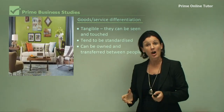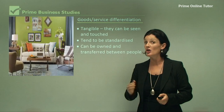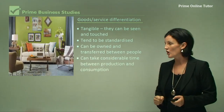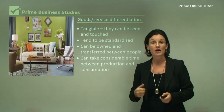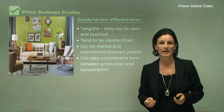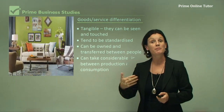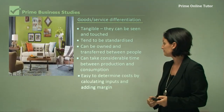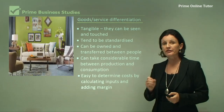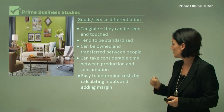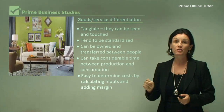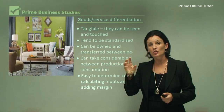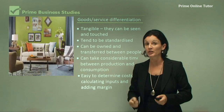Goods can be owned. If I buy a table, I own that table and then I can resell it. Goods take considerable time between production and consumption. If I buy a chair, it's not going to happen automatically — that chair needs to be made. Sometimes I may need to order that chair and it could take weeks for me to receive my purchase. However, goods are very easy in that it's very easy to determine the inputs and the cost of the good. If I calculate all my inputs, I'm then able to add a margin to work out how much profit I can make from that product.